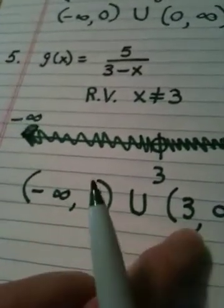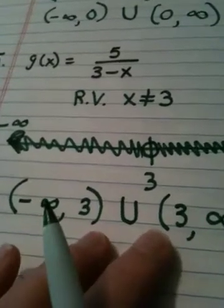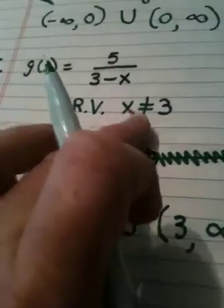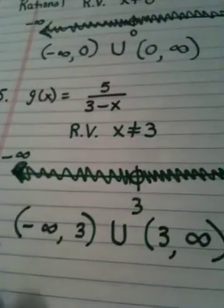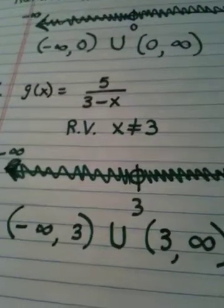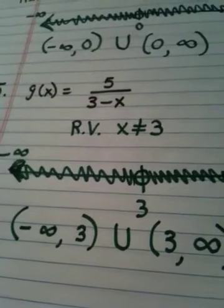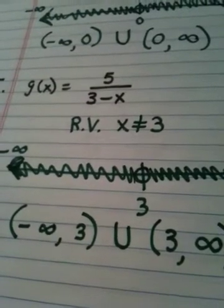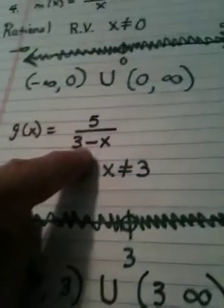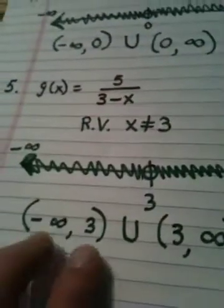No bracket, no bracket. Because if you put a bracket, you would be including the restricted value. And the domain is not allowed to have the restricted value in it. But if you tried to put three into this function, you would get an undefined mess.